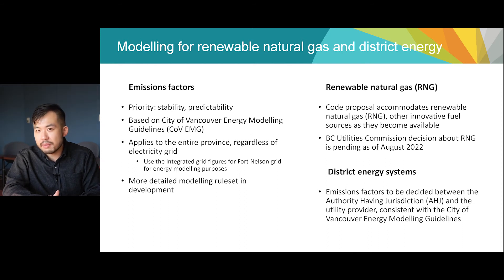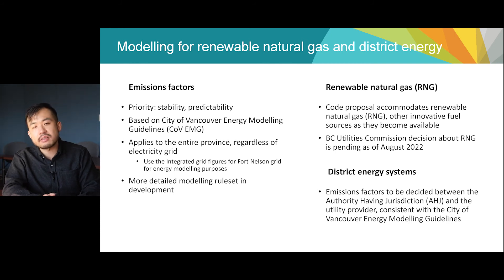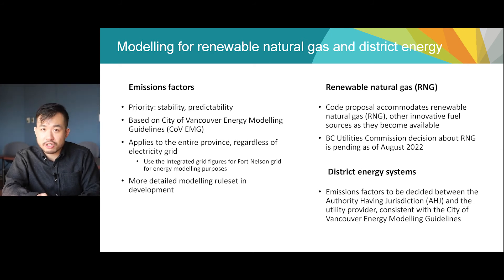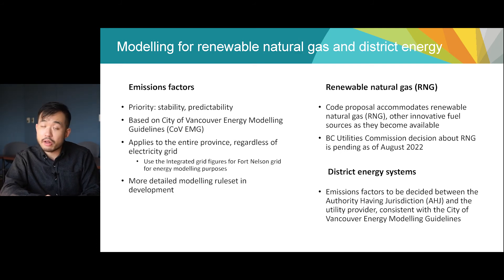Although there are lots of ways to calculate emissions factors, we're proposing this approach because we think it is the most straightforward way to influence choices during the design and construction phase. Because we're more interested in influencing building decisions as opposed to accurate emissions accounting, we are proposing to use a single set of emissions factors for electricity, regardless of whether the building is connected to the integrated grid or the Fort Nelson grid, which has significantly higher emissions. As utilities decarbonize, the actual emissions of buildings will decrease, and when their emissions settle, we can see if this approach needs to be revisited. The granular details needed by design professionals will be in a modeling rule set, which is currently in development, so stay tuned for that.